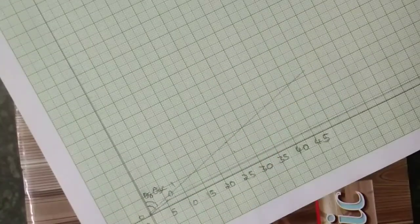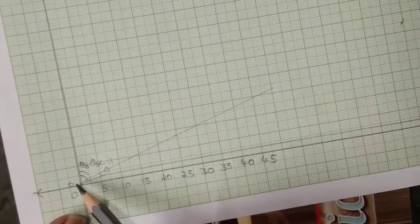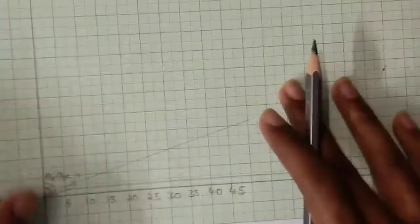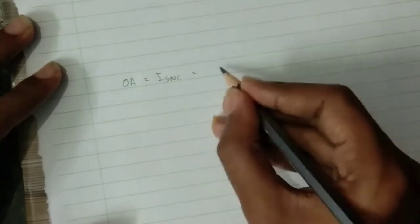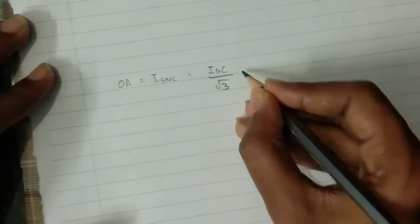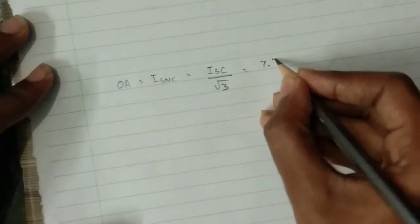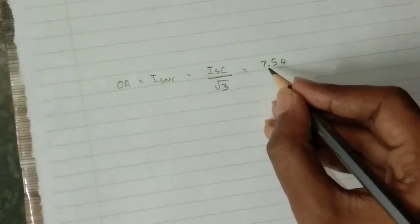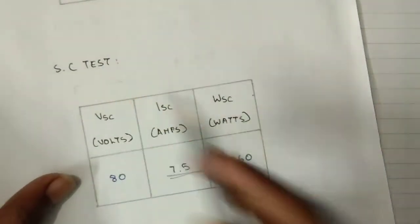Next, for calculating OA, we are going to calculate ONA, ISNC. That is OA length is ISC by root 3. ISC value is 7.54, we have got from this value, short circuit test.